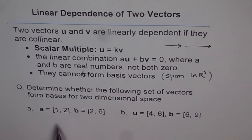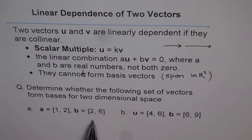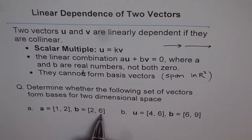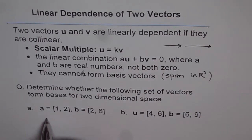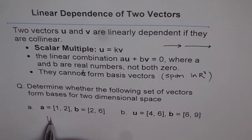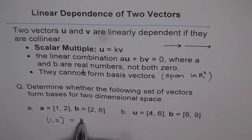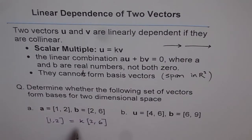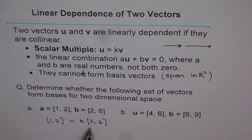We will check whether these vectors are dependent or not. If they are dependent, then they are collinear and cannot form a basis for two-dimensional space. So vector a is (1, 2) and vector b is (2, 6). Can we write a = k times b? That is, can we write (1, 2) as k times (2, 6)? If we can, then they are scalar multiples, they are collinear, and they are dependent, so they cannot form a basis for two-dimensional space.